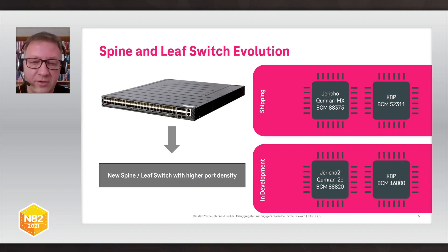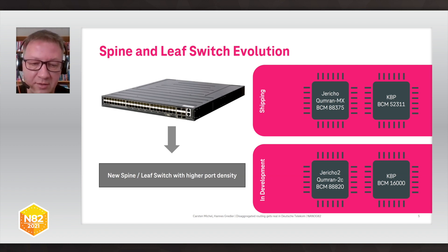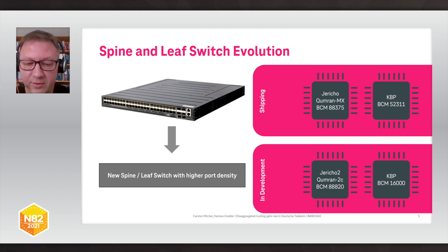At Deutsche Telekom, we extensively use hierarchical QoS, which is not easy to implement with most chips on the market. Starting back in 2018-2019, we used standard EdgeCore white box switches with Broadcom QumranMX and a knowledge-based processor on board. The QumranMX chip provides a sophisticated traffic manager that allows us to implement our hierarchical QoS schema. The QumranMX also provides enough throughput for our use cases, and the FIB size is sufficient for most internet applications. In addition, the knowledge-based processor is used for lookup table extension to support a large number of match rules that we need, for instance for subscriber access lists, statistics counters, service queues, etc.